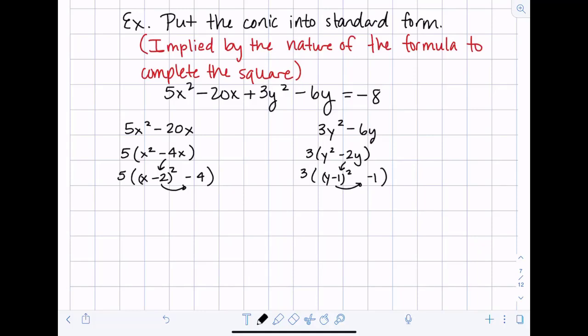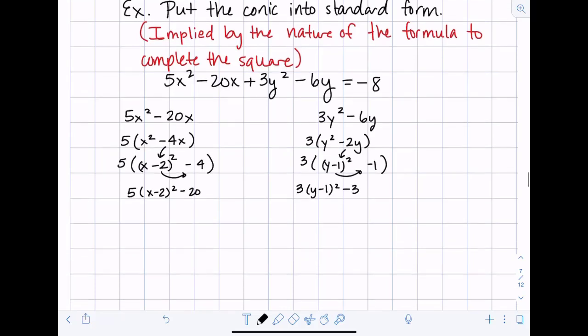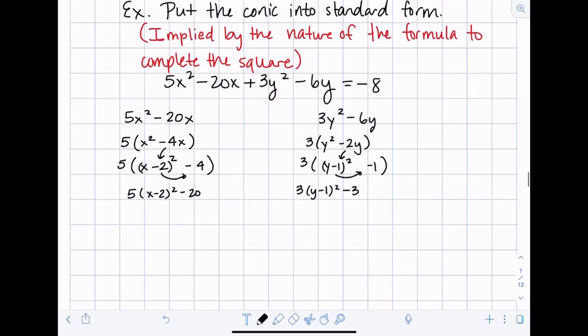So then distributing it out we get 5x minus 2 squared minus 20 and we get 3y minus 1 squared minus 3. Now we're going to put that back into our original equation. So we get 5x minus 2 squared minus 20 plus 3y minus 1 squared minus 3 equals negative 8 and cleaning this up we add it looks like we'll add 20 we'll add 3 so we're adding 23 total to the right and that would give me 23 minus 8 would be 15.